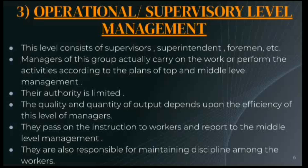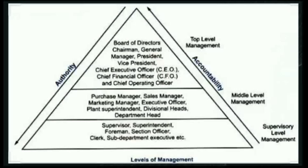To summarize: the top level management consists of the board of directors, chairman, general managers, president, vice president, chief executive officer, chief financial officer, and chief operating officer. The middle level management consists of purchase managers, sales managers, marketing managers, executive officers, plant superintendents, divisional heads, and departmental heads. The supervisory or operational level consists of supervisors, superintendents, foremen, section officers, clerks, and sub-departmental executives.